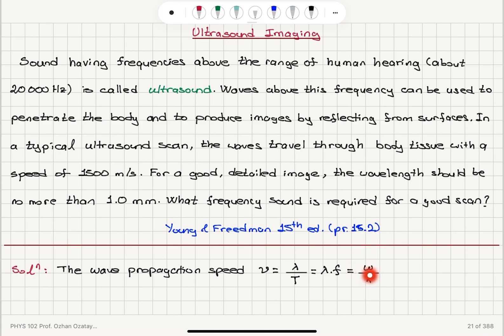omega is 2πf, k is 2π over lambda, so 2π's cancel, we obtain lambda times f.